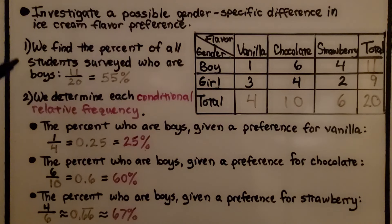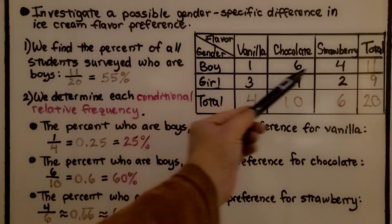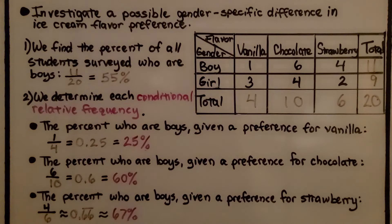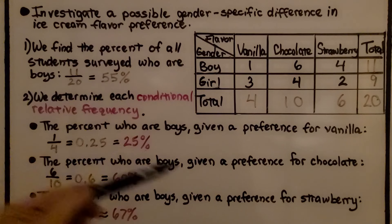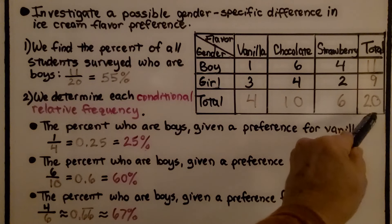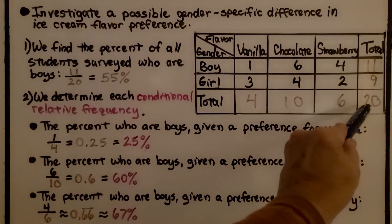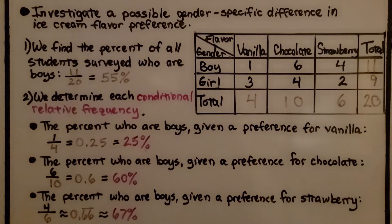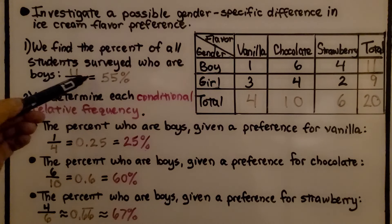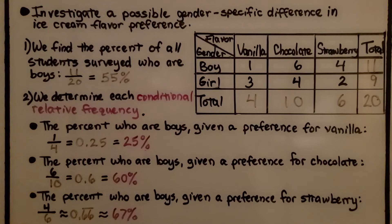We find the percent of all students surveyed who are boys. For boys, the total surveyed is 11, and that would be 11 twentieths because 20 is the grand total of all students surveyed. We have 11 out of 20 that are boys. 11 twentieths equals 55%.